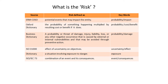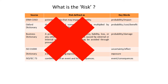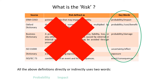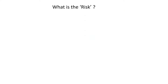For exam purposes, we need not worry about any of these definitions. All the above definitions directly or indirectly use two words: probability and impact. So for us, risk is probability and impact, and we need not worry about any of the above definitions from an exam perspective.